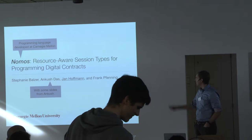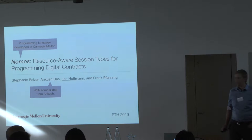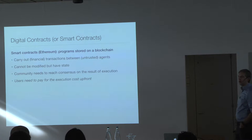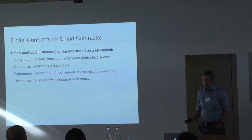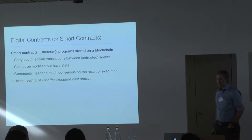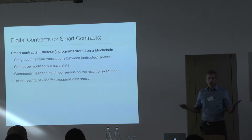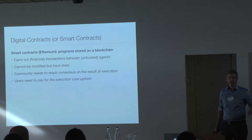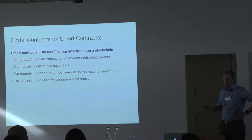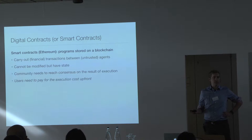Nomos is a programming language for implementing digital contracts. Digital contracts are programs that carry out financial transactions between potentially distrusting parties. Often money is involved, but doesn't necessarily have to be. Once published, a contract cannot be modified anymore, though it can have state. I'm mostly going to talk about smart contracts, which are digital contracts stored on the blockchain, though most things also apply to settings where a trusted third party like a bank stores the contract.